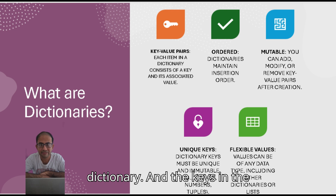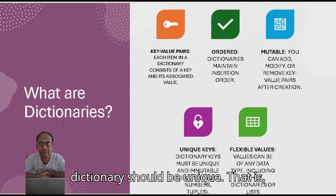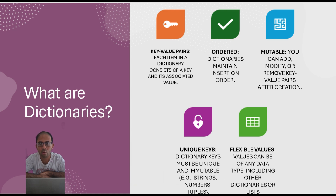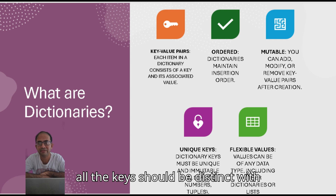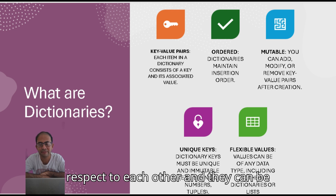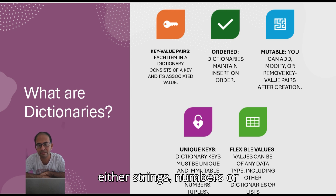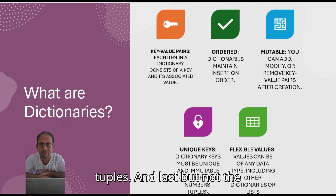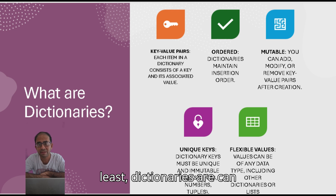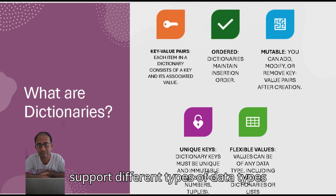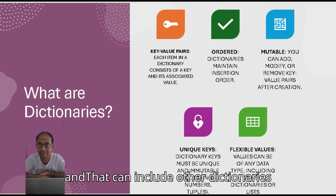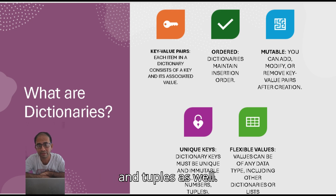The keys in the dictionary should be unique — that is, all the keys should be distinct with respect to each other. They can be either strings, numbers, or tuples. Last but not the least, dictionaries can support different types of data types, and that can include other dictionaries and tuples as well.